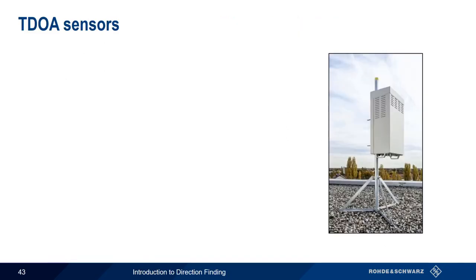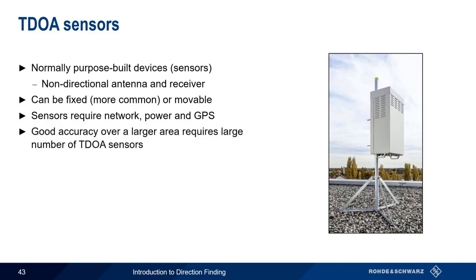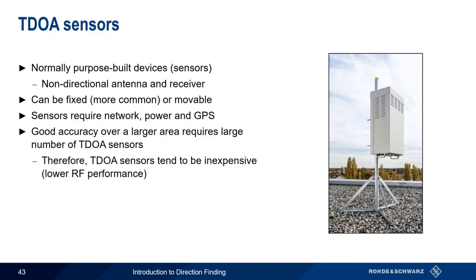All of the previously discussed direction finding methodologies, such as Doppler, Watson-Watt, or correlative interferometry, each require a special type of directional antenna or antenna array. TDOA, on the other hand, is concerned with the time at which a signal arrives rather than the direction or angle from which it arrived, and thus requires collection and time stamping of all data at multiple points simultaneously. Therefore, TDOA-based direction finding is typically implemented in the form of purpose-built sensors that contain both a receiver and a non-directional antenna. These sensors can be more or less permanently fixed in a location, or can be moved. The sensors require a network connection for sending the timestamped IQ data back to the master station, as well as power and GPS for both location and timing. Dedicated TDOA sensors tend to be relatively inexpensive, and thus have lower RF performance than receivers used in other DF methodologies.